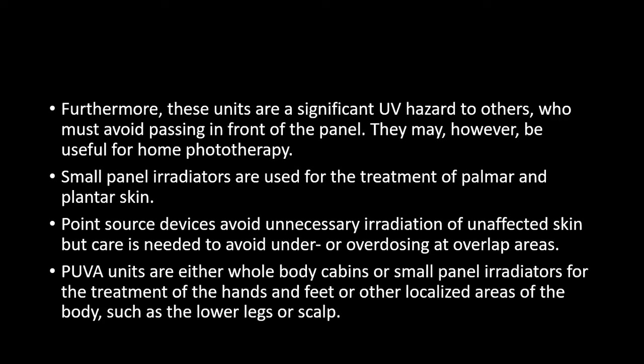Whole body panels necessitate rotation of patients to provide uniform irradiation from the front and back positions. These units are a significant UV hazard to others who must avoid passing in front of these panels; however, these panels may be used for home phototherapy. Small panel irradiators are used for palmar and plantar skin. Point source devices marketed as excimer lasers avoid unnecessary irradiation to unaffected skin, but care is needed to avoid under- or overdosing at overlap areas. PUVA units are either whole body cabins or small panel irradiators for hands, feet, or other localized areas like leg and scalp.